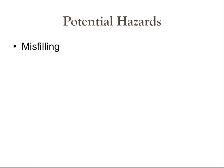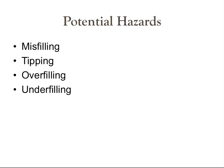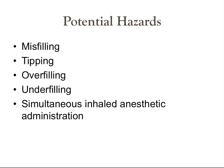There are multiple potential hazards with vaporizers. Misfilling can cause either too much or too little anesthetic to be given; the safety check is a key device specific to the agent and vaporizer. Tipping can cause agent to enter the bypass chamber, leading to an extremely high agent concentration output — avoid this by attaching the vaporizer to the machine during transport or setting the transport dial. Overfilling causes liquid anesthetic to enter the bypass chamber and increase agent output; underfilling decreases agent output. Simultaneous inhaled anesthetic administration is avoided by the interlock system, which prevents turning on multiple vaporizers at the same time.